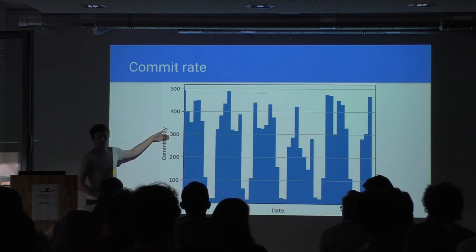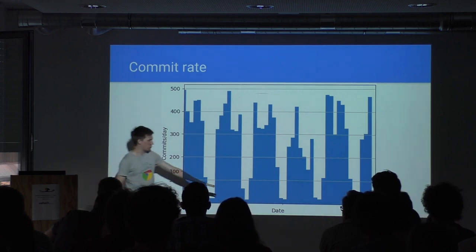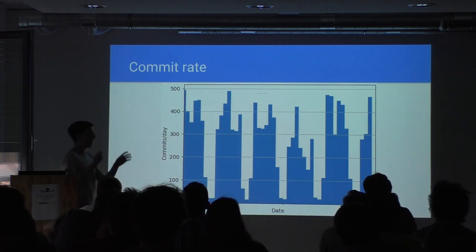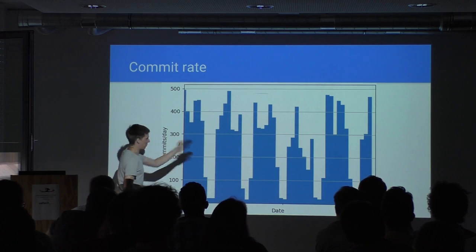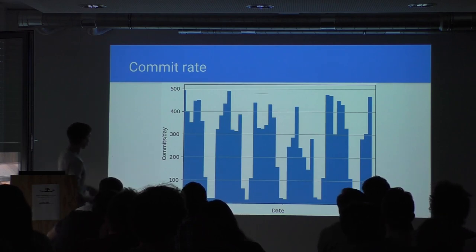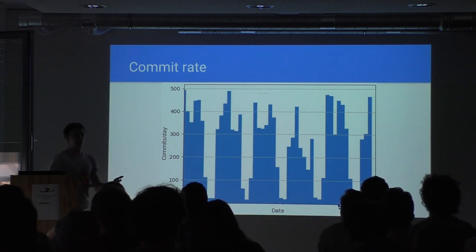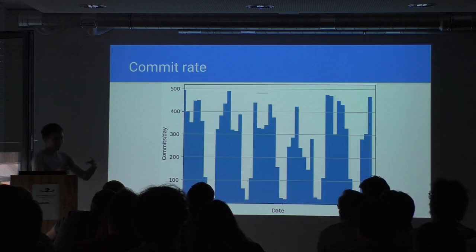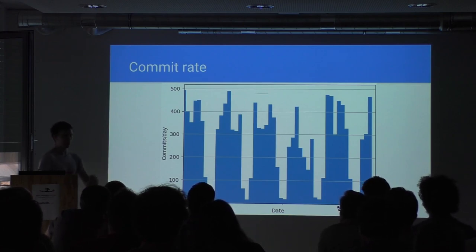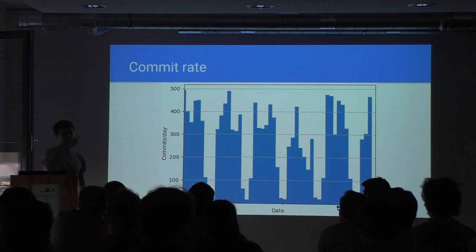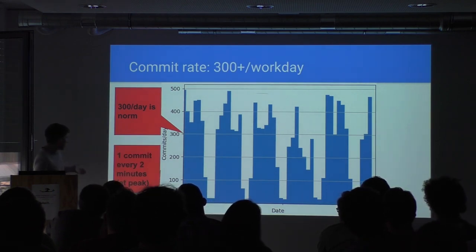You can see this week is July 4th — a US holiday — so contribution rates are a bit low, but Europe and Asia are still working. There are also peak hours around lunchtime in each timezone, where people press commit after all tests pass and go eat. At times we reach one commit every two minutes.